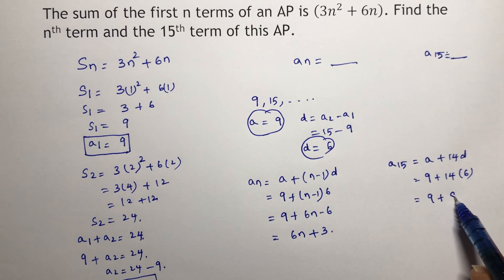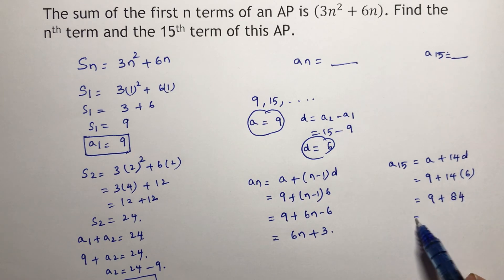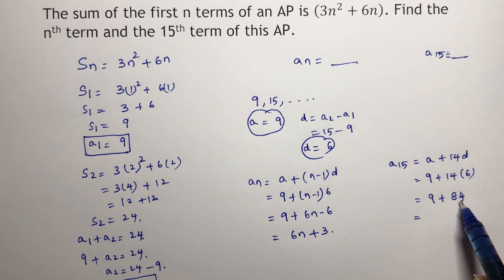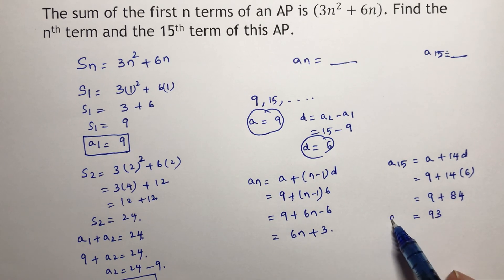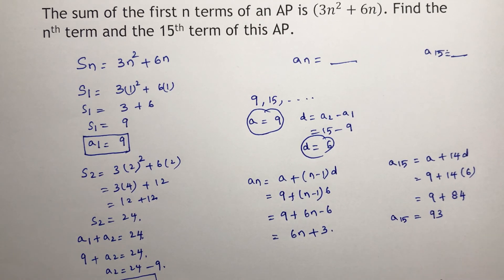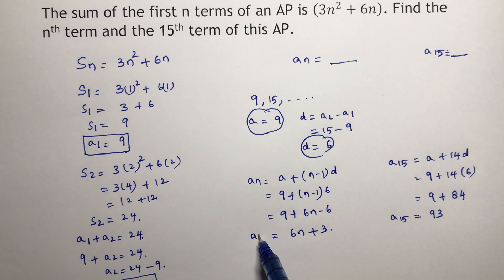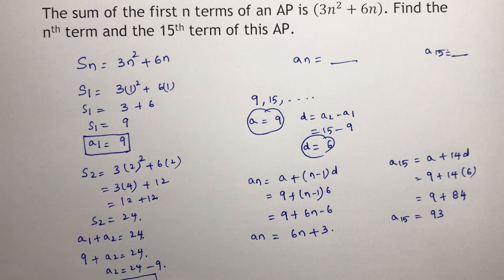9 plus 14 times 6 is 84. So 9 plus 84 is 93. So the 15th term is 93. So the 15th term is 93 and the nth term is 6n plus 3.